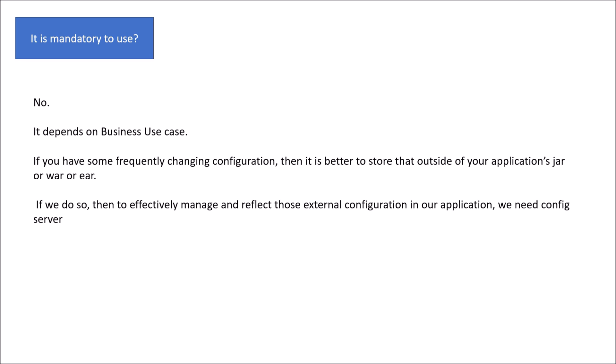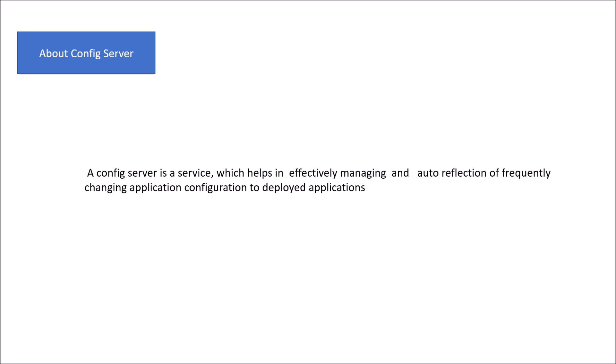That service we call a config server in microservice architecture. The definition of a config server is: a service which helps in effectively managing and auto-reflection of frequently changing application configuration to deployed applications. Two important terms here are 'effectively managing' and 'auto reflection' — these are key aspects of a mature config server that we will discuss later in this video. The question is how to effectively manage and auto-reflect those changes, so let's look at how to create a config server first.